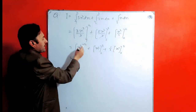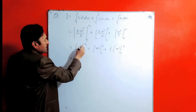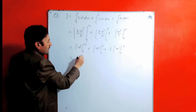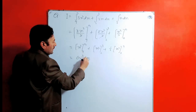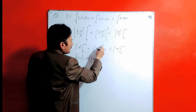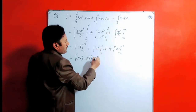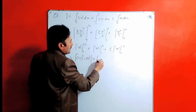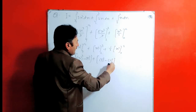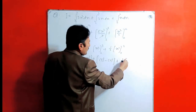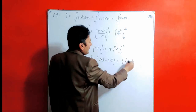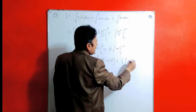Now applying the limits: x cubed with limit from 9 to 14, so we take 14 cubed minus 9 cubed. After that, the second term x squared with limits gives 3 squared minus 2 squared. At last, 1 over 2 into applying the limit: 2 squared minus 0 squared.